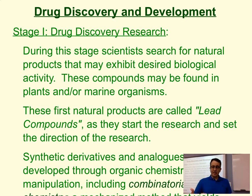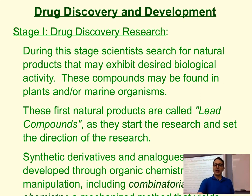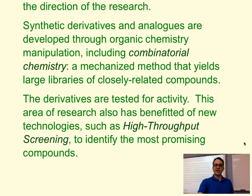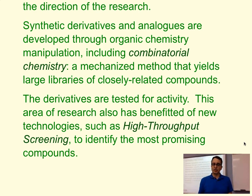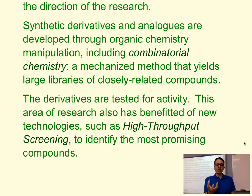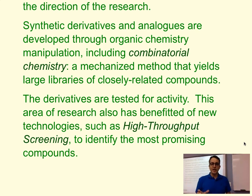Those lead compounds, if they are promising — if they are tested and seem to have some chemical activity, if they have some structural motifs that we are interested in — we are going to go ahead and make synthetic derivatives and analogs. We do this using organic chemistry and modern methodologies such as combinatorial chemistry, in which we can create a large library of compounds based on the same structure, changing small features to increase or decrease binding to a particular cell receptor, giving us the desired effect.